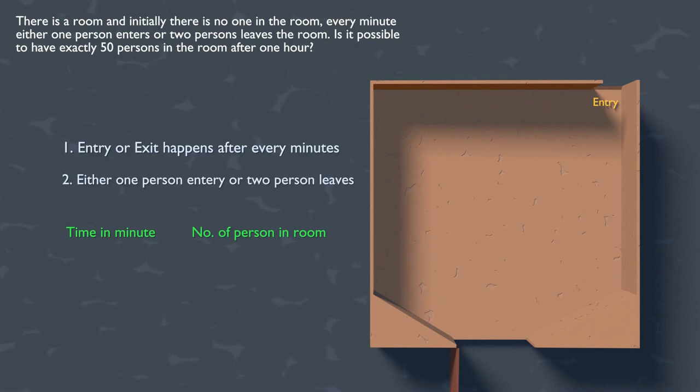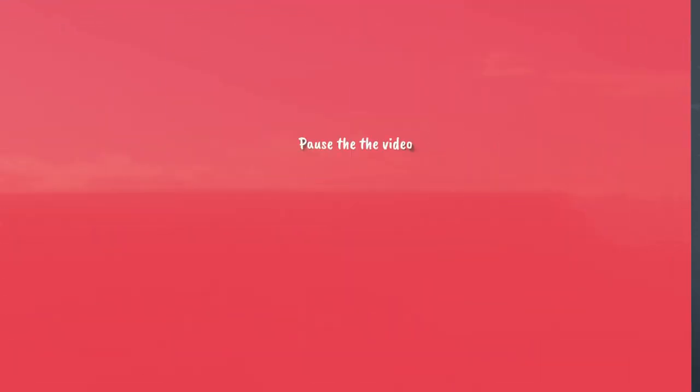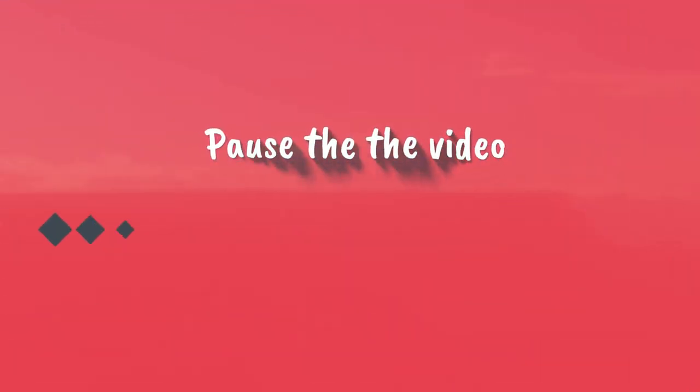So now the question is, if we keep going like this without breaking any rule specified, then is it possible to have exactly 50 persons in the room or not after exactly 60 minutes? I would like you to pause the video and try to find the pattern or the invariance here. That means something which is not changing over the entire task.